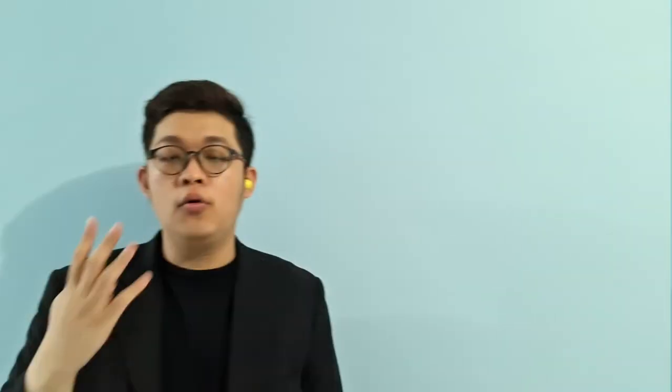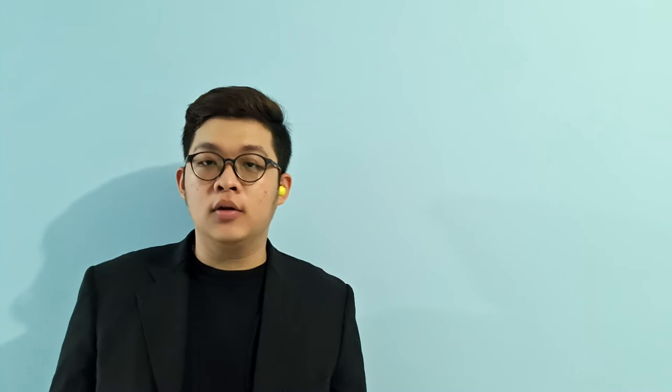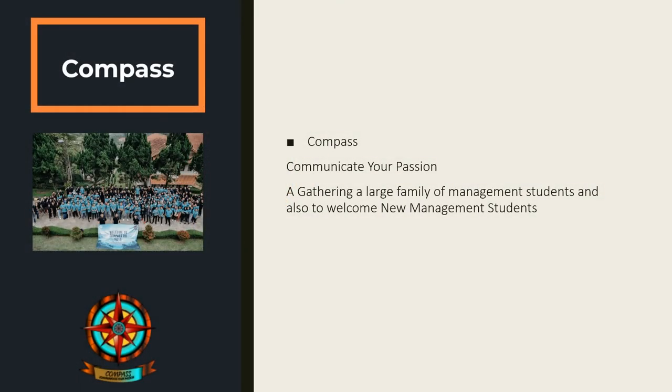The fourth is Euphoria — Entrepreneurship for Millennials. The support events within Euphoria include a talk show, business case and business plan competition, a bazaar, and the final Euphoria concert. The fifth is COMPASS — Communicate Your Passion — which is a gathering of the large family of management students and also serves to welcome new management students.